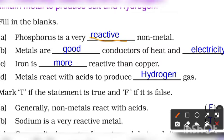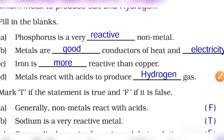Metals react with acids to produce ____ gas. When metal reacts with acid, then hydrogen gas is produced.